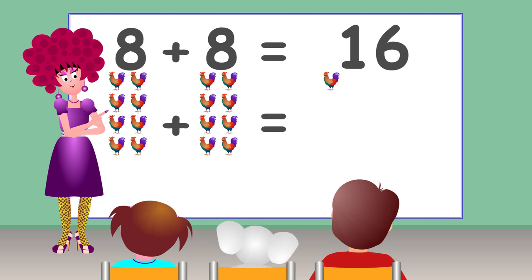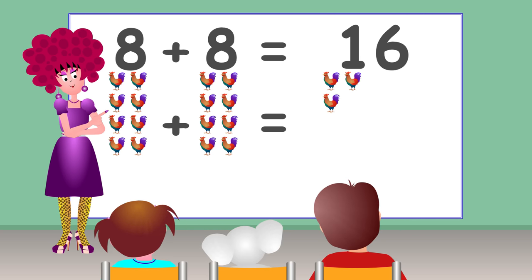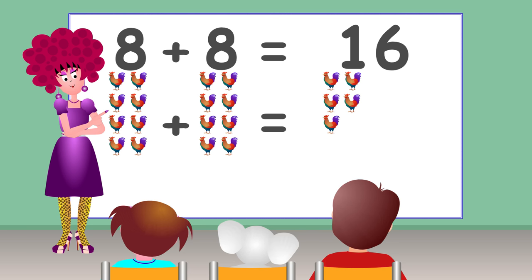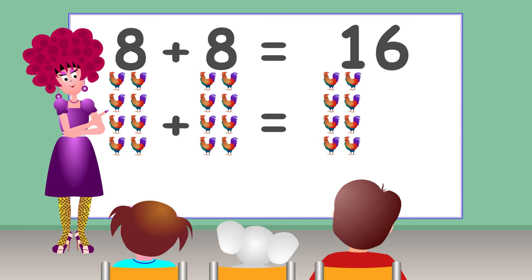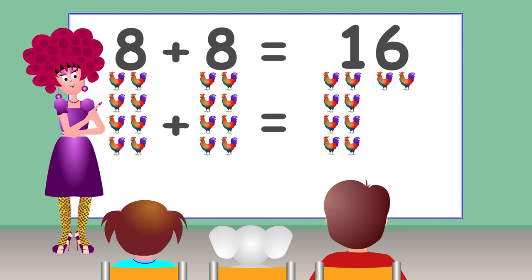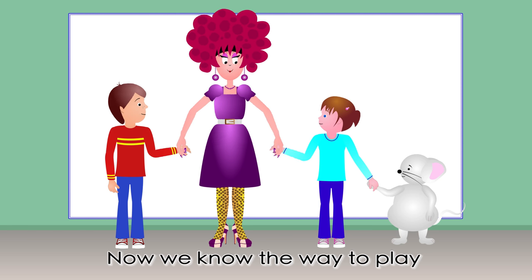One, two, three, four, five, six, seven, eight, nine, ten, eleven, twelve, thirteen, fourteen, fifteen, sixteen. Now we know the way to play.